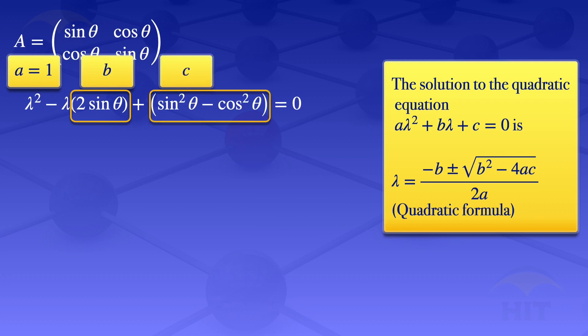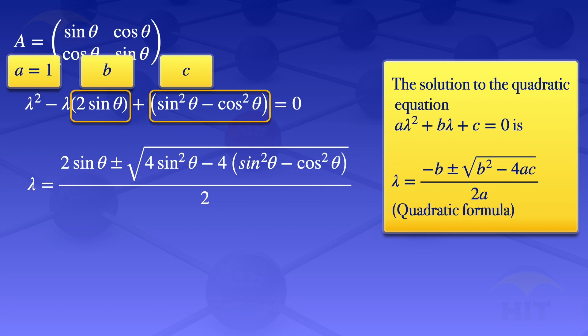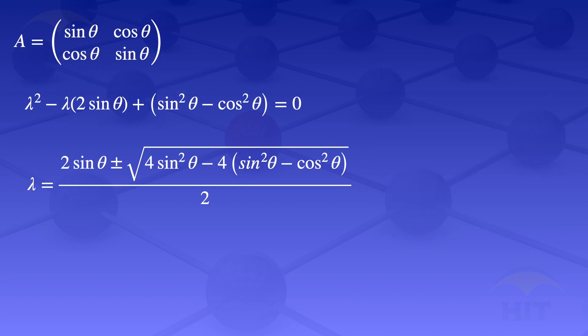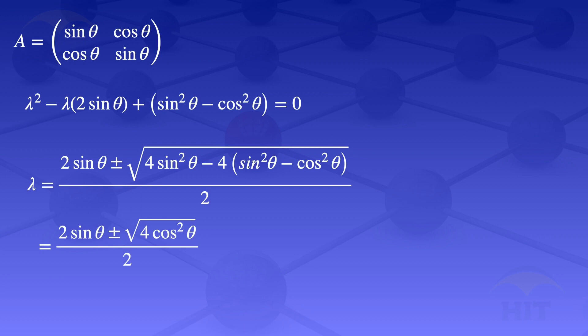The constant term c is sin²θ − cos²θ. Substituting into the quadratic formula gives λ = (2 sin θ ± √(4 sin²θ − 4(sin²θ − cos²θ))) / 2. Under the square root, the 4 sin²θ terms cancel to zero, and −4 times −cos²θ gives +4 cos²θ. So λ simplifies to (2 sin θ ± √(4 cos²θ)) / 2.